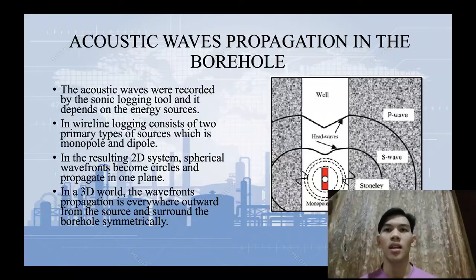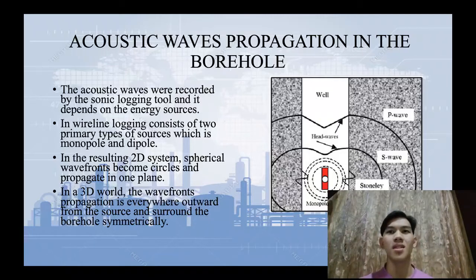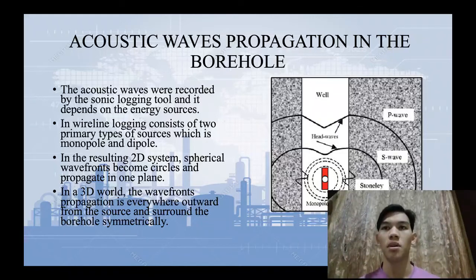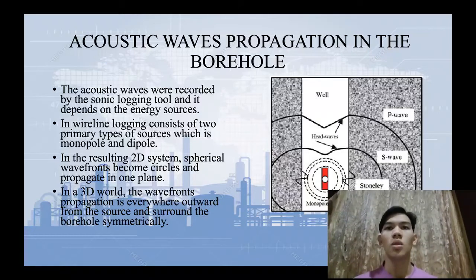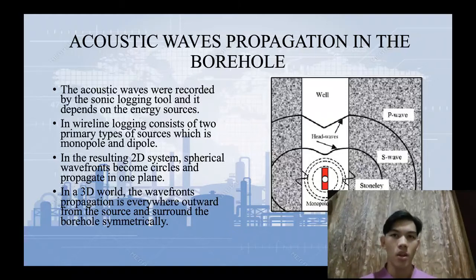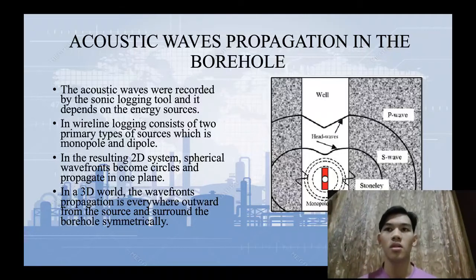In wireline logging, it consists of two primary types of sources: the monopole and dipole. The monopole transmitter emits energy equally in every direction away from the center. The dipole transmitter only emits energy in a preferred direction. In a 2D system, spherical wave fronts become circles and propagate in one plane. In a 3D world, the wave fronts propagate everywhere outward from the source and surround the borehole symmetrically.